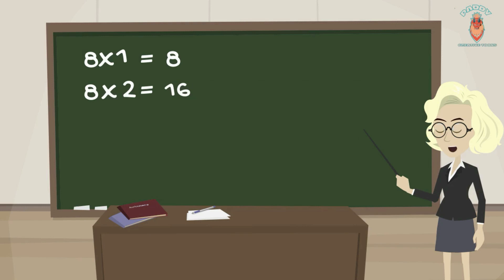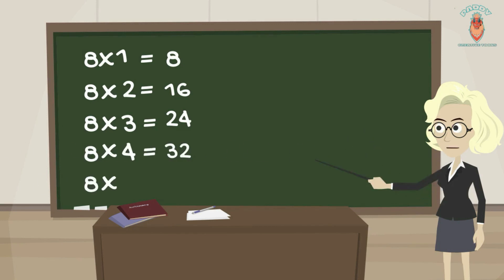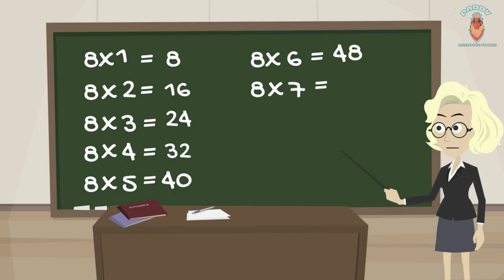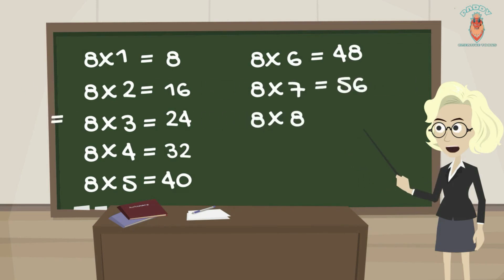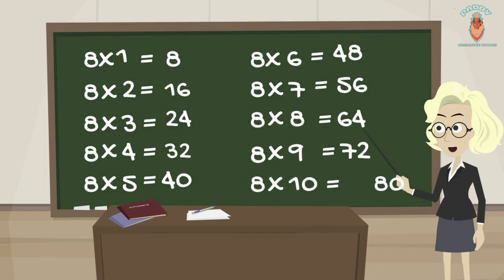8 1s are 8, 8 2s are 16, 8 3s are 24, 8 4s are 32, 8 5s are 40, 8 6s are 48, 8 7s are 56, 8 8s are 64, 8 9s are 72, 8 10s are 80.